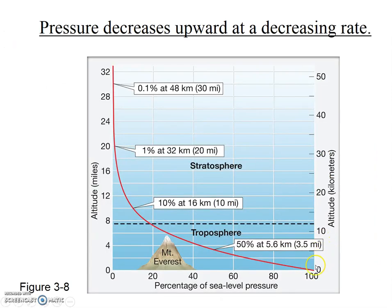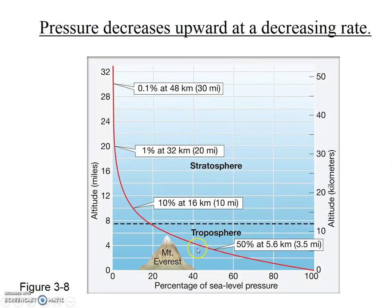We can see the same thing on a graph from Chapter 3. Down at zero altitude — sea level — we have 100% atmospheric pressure. As you go up in altitude, the pressure declines. As we learned in Chapter 3, the pressure does not decline linearly; it actually decreases at a decreasing rate. So in the first few miles of altitude, pressure decreases considerably, and then it continues to decrease, but not quite as fast as you go up higher and higher in elevation.